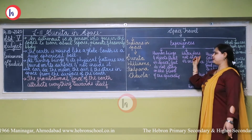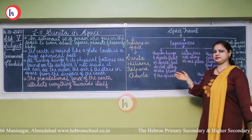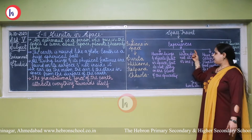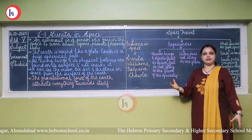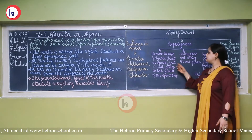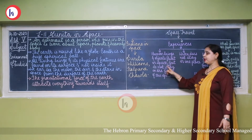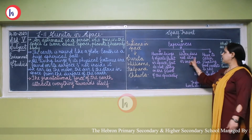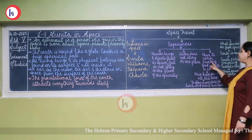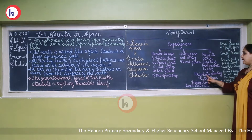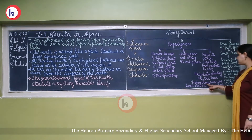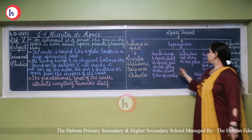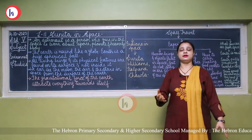Sunita Williams shared her experience. When she went to space, she described how she experienced life there. Human beings and objects float in space. Feet do not stay on the floor of the spaceship. Water does not stay in one place. You have to catch floating food packets to eat. Hair keeps standing all the time. To stay in one place, one has to strap oneself to an object.